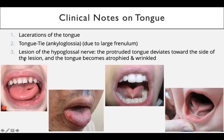The third clinical condition is a lesion of the hypoglossal nerve. A student is asked: what kind of muscles does the hypoglossal nerve supply?